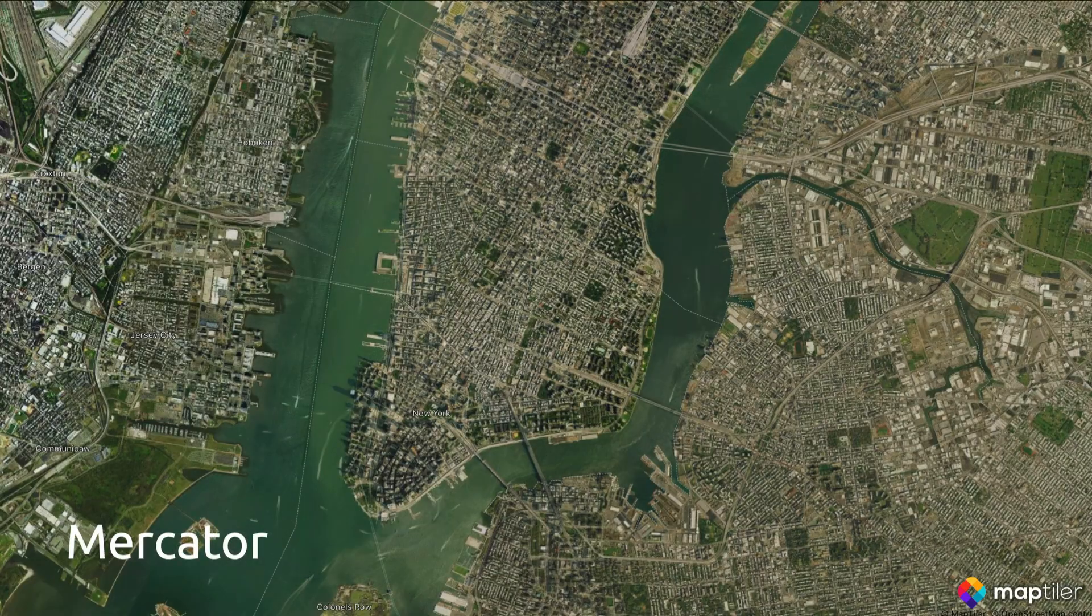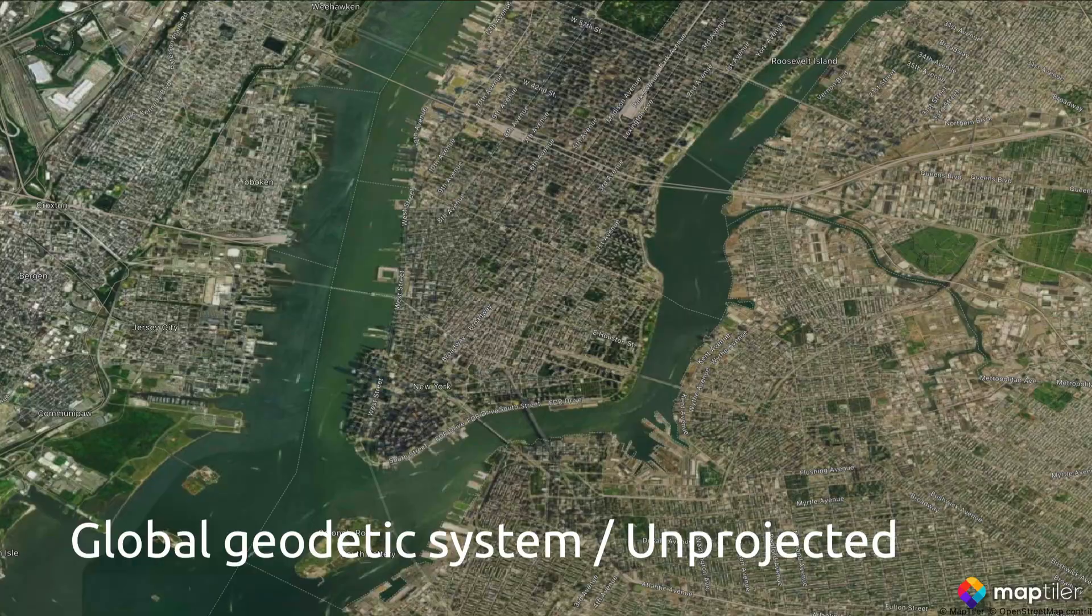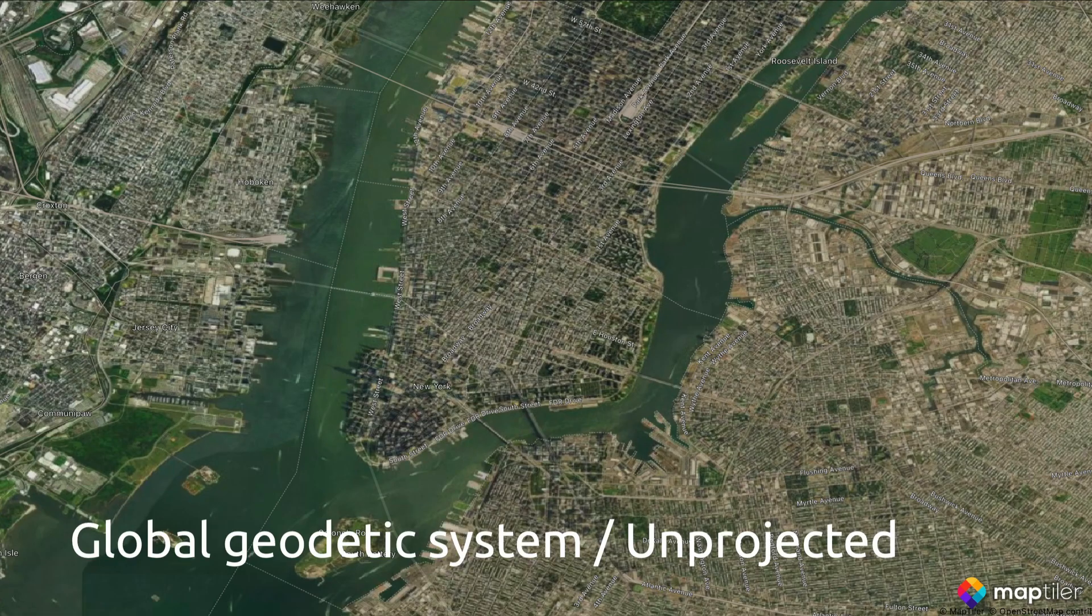Once you project the map, the buildings, islands and all the other features appear in the shapes we're used to seeing. Again, we'll talk more about this in the map projections video.